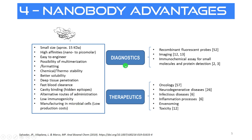As diagnostics, for example, you can have recombinant fluorescent probes when you attach a fluorophore to a nanobody. For imaging, you can add a radio label to it and then inject it and have patients sit in a PET scan — patients that are injected with these diagnostics.